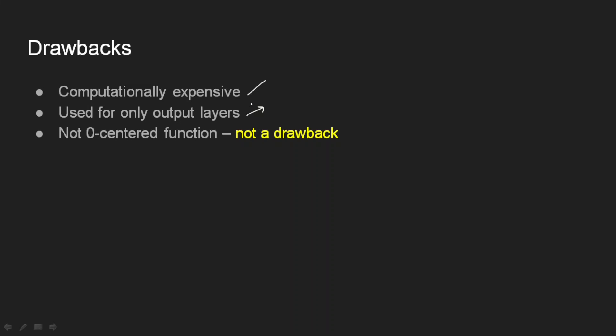If we had a requirement for the sum to equal 1 in hidden layers, we might need Softmax there — but we do not. In fact, we should allow negative values in hidden layers, which is why we use the tanh activation function. That is why Softmax is not used for hidden layers — it is preferred only for output layers. Also, as we have seen, Softmax is not zero-centred. Of course, that is actually a requirement here since we cannot have negative probabilities — so this is not really a drawback.